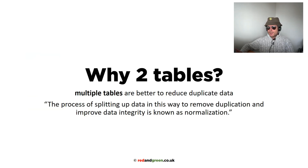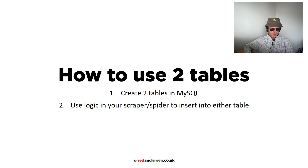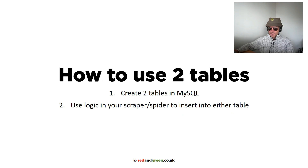Firstly, why do we need two tables? Multiple tables are better to reduce duplicate data. The process of splitting up data in this way is to remove duplication and improve data — normalization. How do we use two tables?